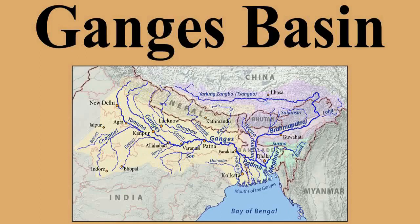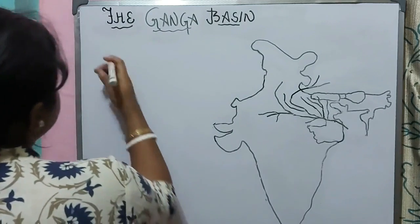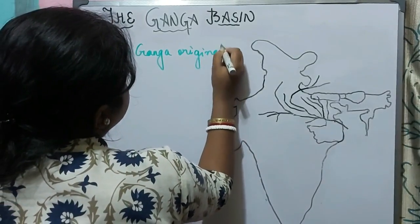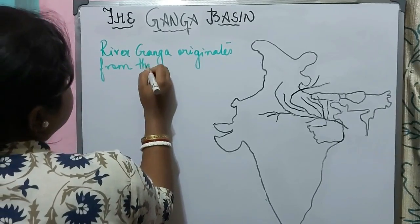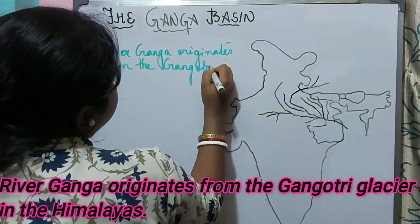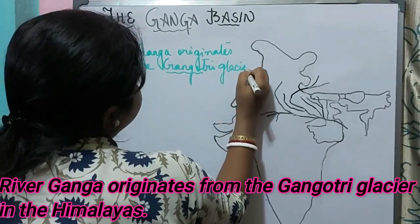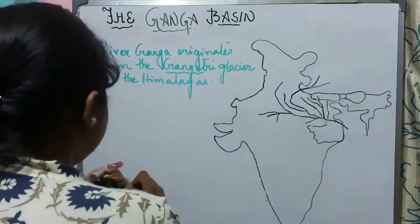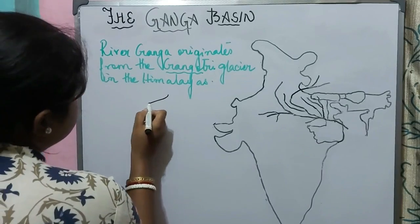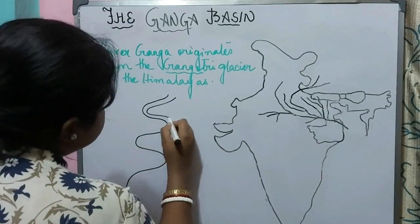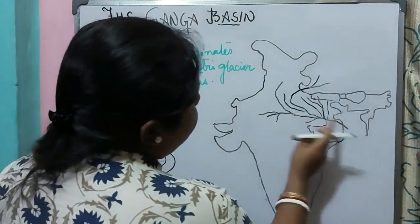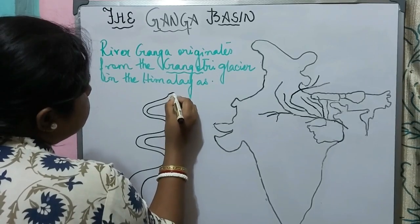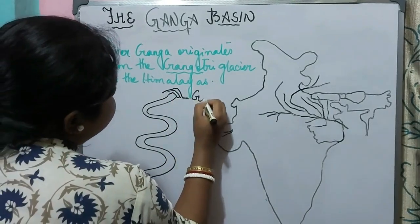The river Ganga originates from the Gangotri glacier in the Himalayas. Let us draw river Ganga — you can see it here. We will come to the map afterwards; first let us understand. So river Ganga originated from the Gangotri glacier.